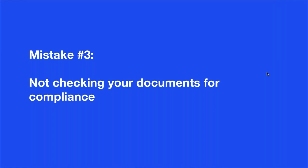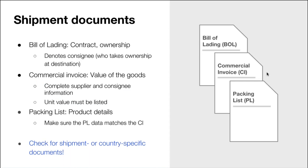Once your shipment starts to move, you'll have many documents exchanged and required throughout the process. Here are the three main documents. Your bill of lading defines the shipper and consignee — who takes ownership at destination. Throughout the shipment, it acts as a contract or permission to own the goods, so having all that information correct is really important. The commercial invoice states the actual value of the goods, including unit value, count, and description — it must always have complete supplier and consignee information including country of origin. The packing list always matches the product information on the commercial invoice and must have product details listed out.